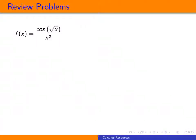We have that f of x is equal to the cosine of the square root of x over x squared, and we want to find f prime of x. The first thing to notice is that this is a quotient, so we're going to want to use the quotient rule in order to take its derivative.